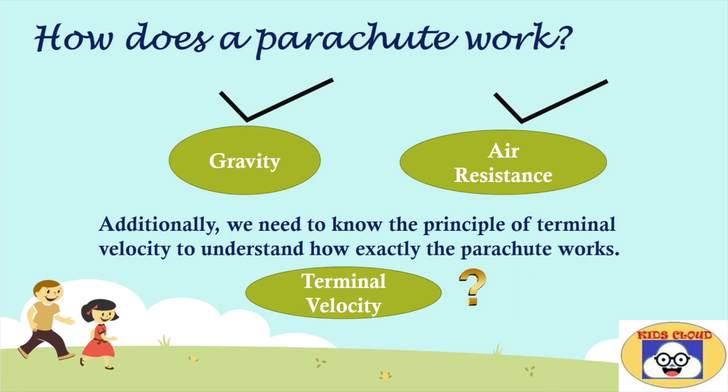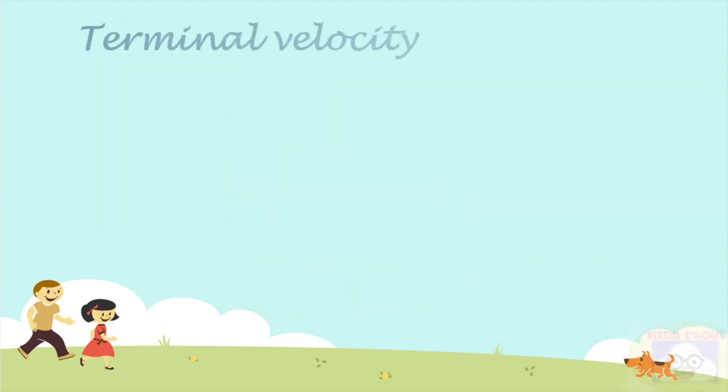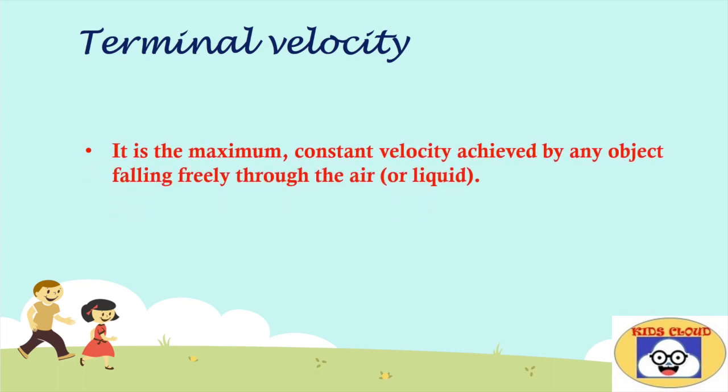Additionally, we need to know the principle of terminal velocity to understand how exactly the parachute works. So what is this terminal velocity? It is the maximum constant velocity achieved by any object falling freely through the air or liquid.